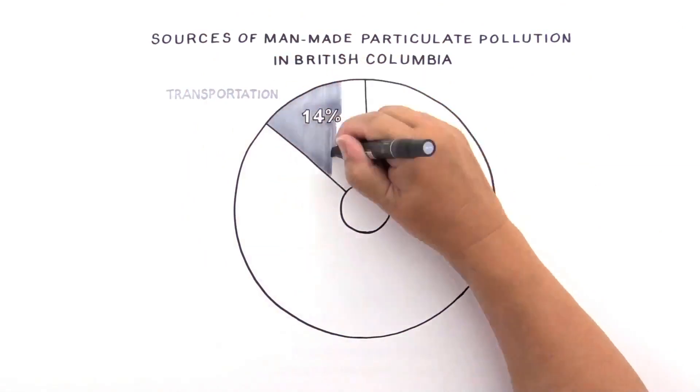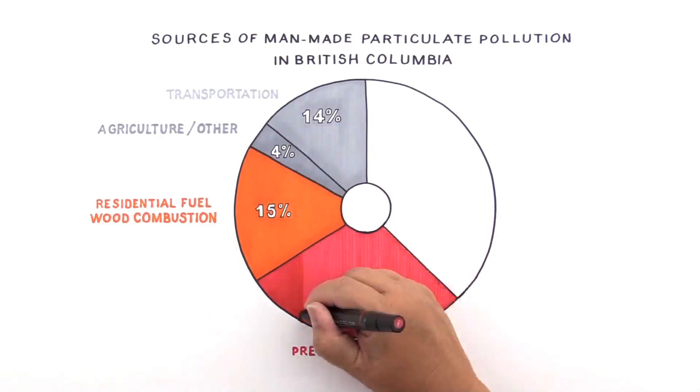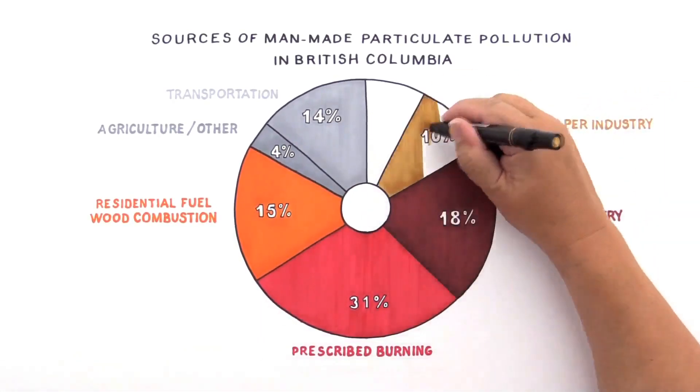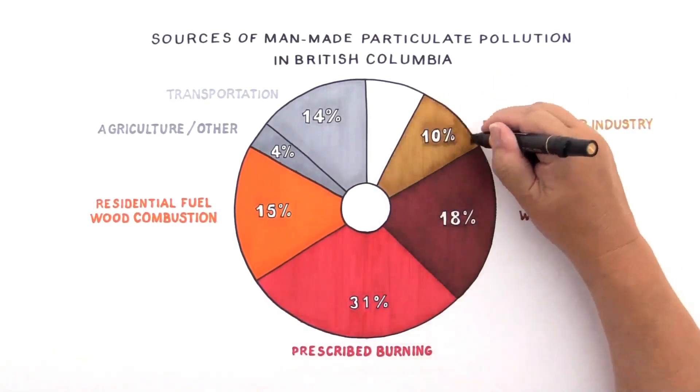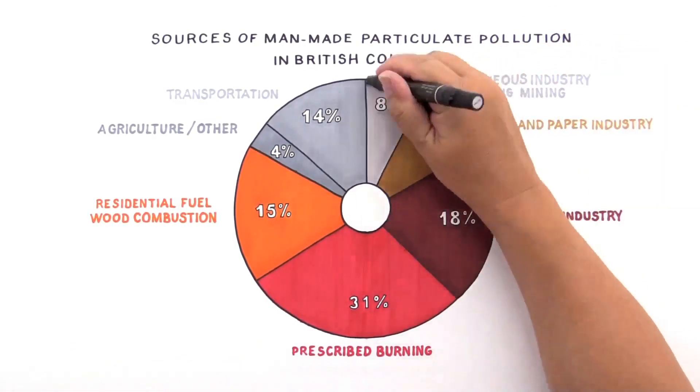The vehicles we drive, agriculture, the furnaces and wood stoves that heat our homes, controlled burns and the forestry, pulp and paper industry accounts for nearly all of British Columbia's particulate pollution. Other industrial sources like mining play a comparatively small role.